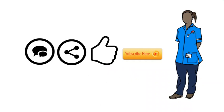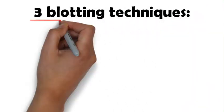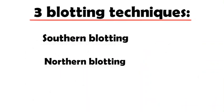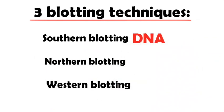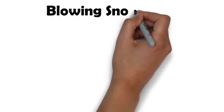As you know, there are three blotting techniques: southern blotting, northern blotting and western blotting. These are for detecting DNA, RNA and protein respectively. The mnemonic to remember this easily for your exam is blowing snow drop.